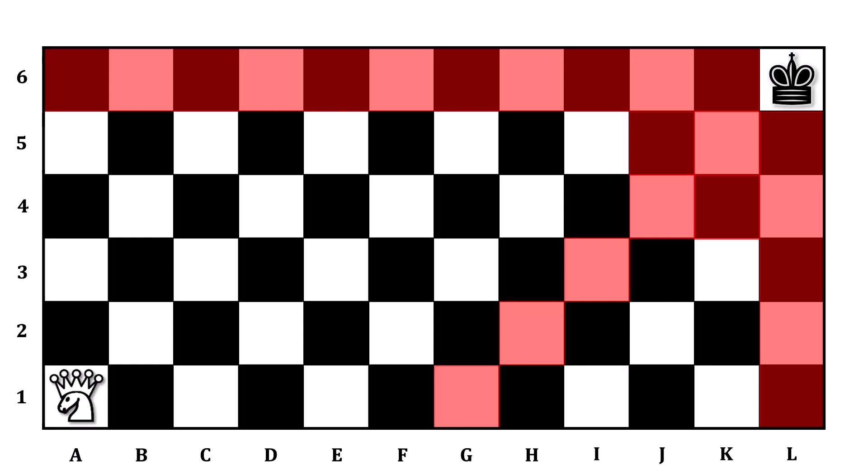Now we can get to the backward induction. Do you see any squares where if the Amazon were on those squares, all legal moves would be to red squares? In fact, there are two. I5 and K3.